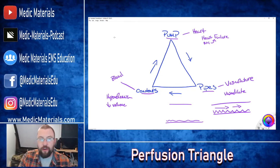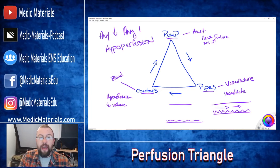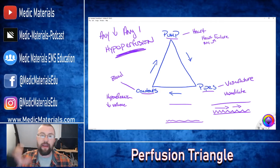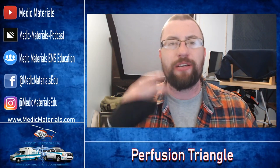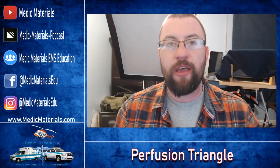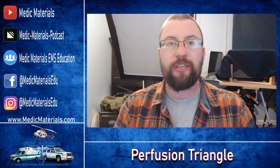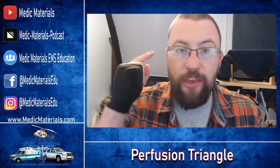Any decrease in any one of these — and this is important — will cause hypoperfusion. That is key. So when we see hypoperfusion or a shock-type state, these are the things we need to be thinking about as EMS providers: how can I fix this? The perfusion triangle is our tool to really understand what it takes to perfuse organs and tissues properly, and to hone in on what we're looking for when we see hypoperfusion and the reasons why it's happening so we can go about fixing it. Till next time guys, I will see you next Tuesday.